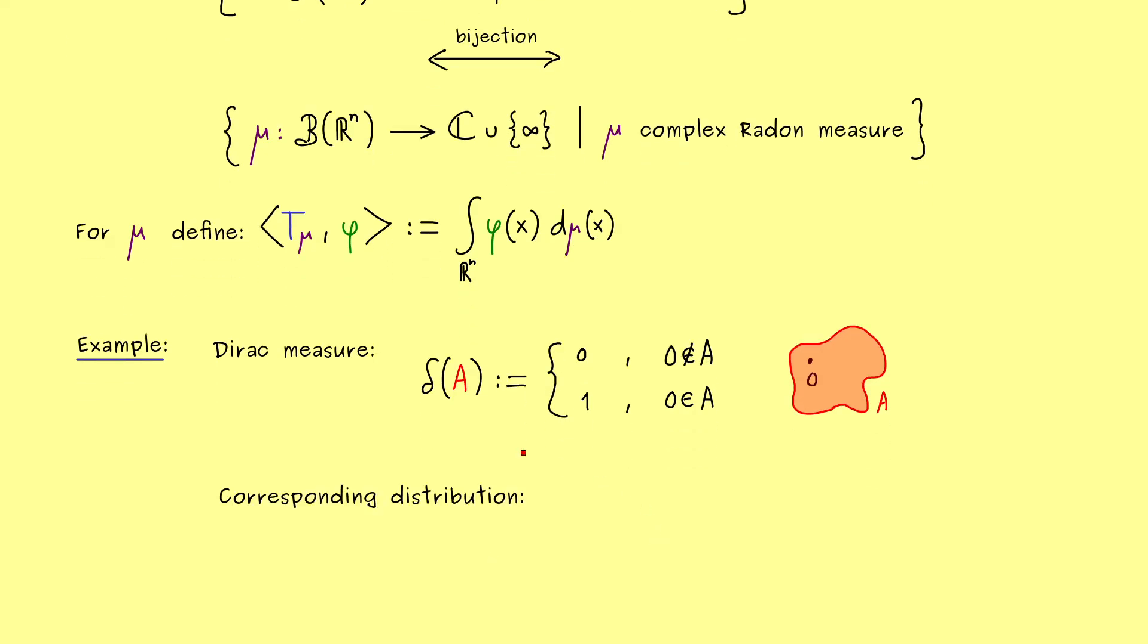However, this is a concept we already know. This is something distributions should do. Therefore, let's check what the corresponding distribution T_δ is. So by using the definition from above, we have this integral with respect to the Dirac measure. However, this means, we only get the value at the origin out.